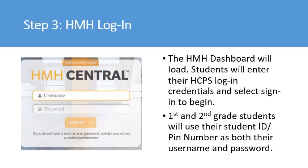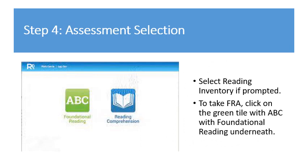This dashboard will load and students will enter their HCPS login credentials and select sign in to begin. First and second grade students will use their student ID or PIN number as both their username and their password. After logging in, you will need to select Reading Inventory if prompted. To take FRA, click on the green tile with the ABC with Foundational Reading underneath.